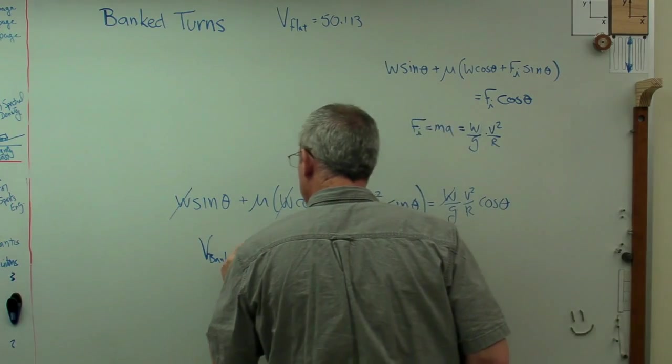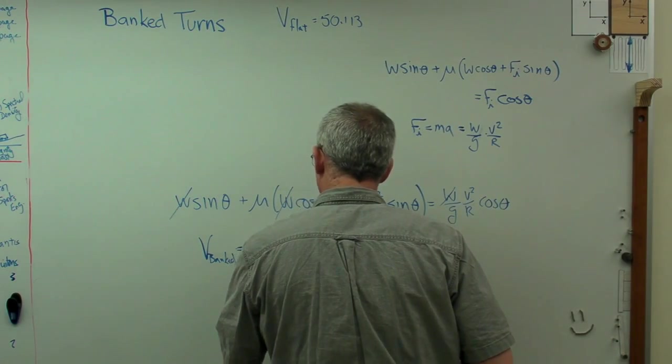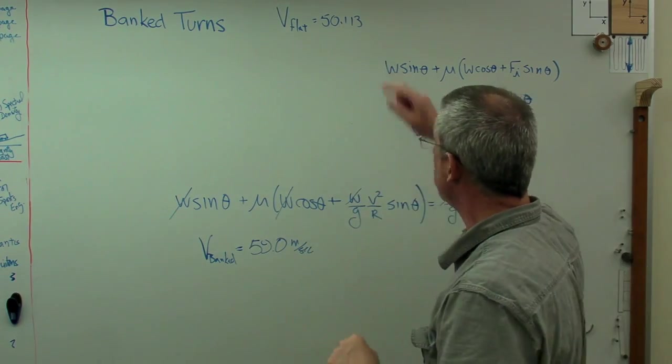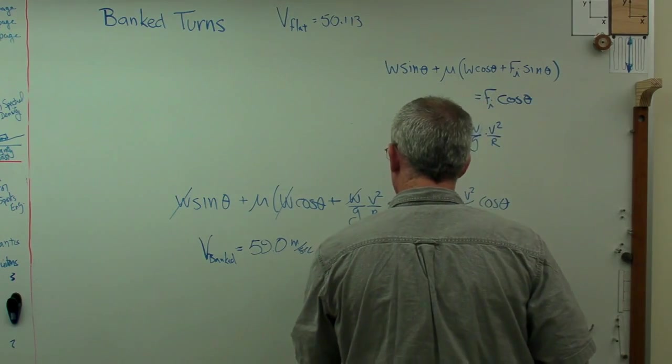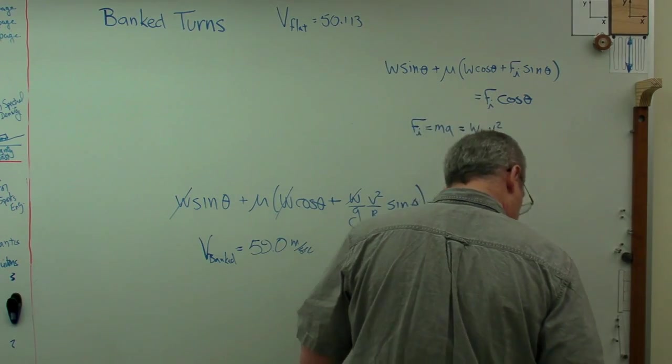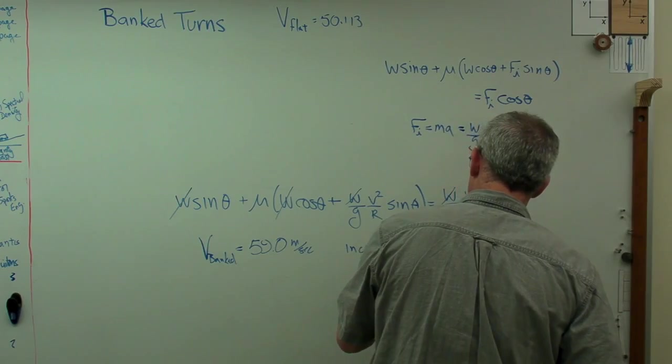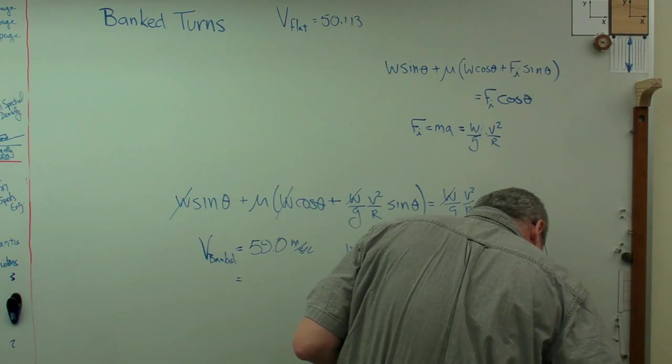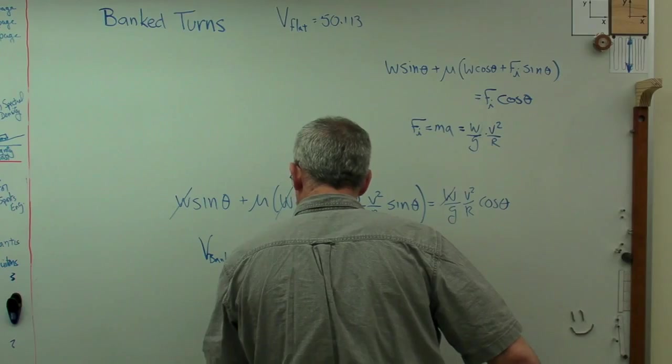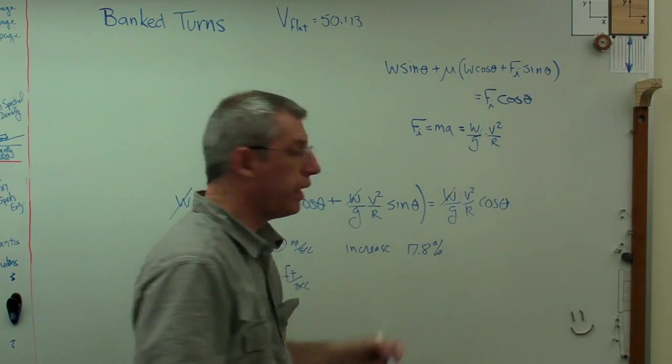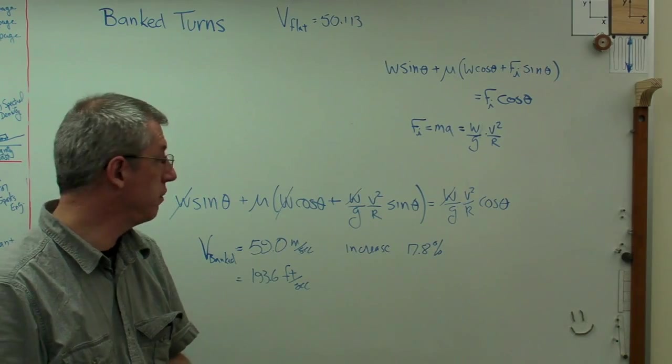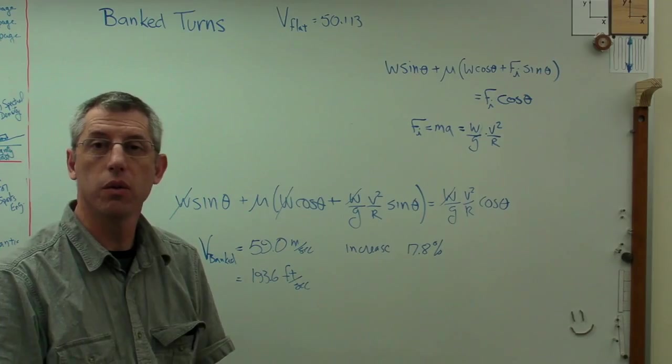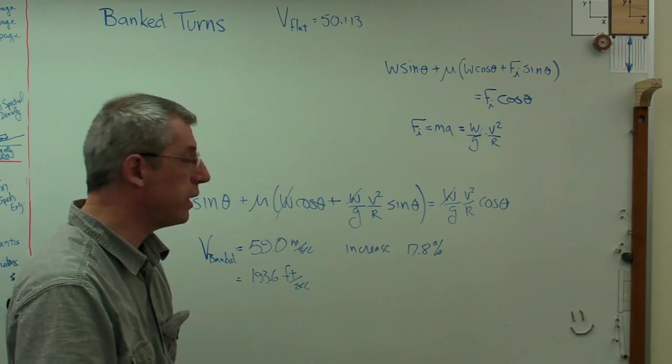Now you've got v max for the banked turn, you get 59.0 meters per second. So we've got about a 9 meters per second improvement. That's an increase of 17.8%. If you want to do that in feet per second, you're going to get 193.6. Almost 18% increase in velocity around the turn. That's a lot in a race. That's why we bank the curves on racetracks. It really does let the car go faster.